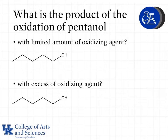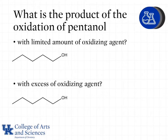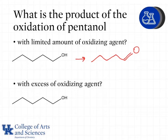Let's look at some examples. What is the product of the oxidation of pentanol with a limited amount of the oxidizing agent? When we have a limited amount of the oxidizing agent, we will only see a partial oxidation of the alcohol. Because this is a primary alcohol, it can be oxidized to form an aldehyde, and this is what will happen in the presence of a limited amount of the oxidizing agent.